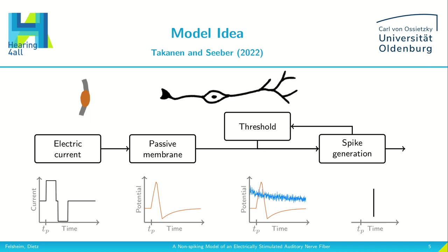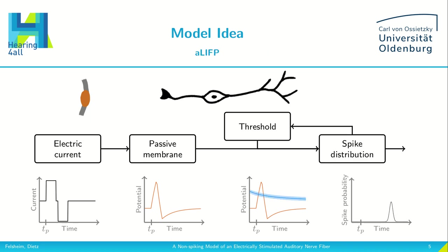Now, in our model we stay with the time-variant Gaussian distribution which describes the threshold. We do all our computations on this distribution, and that's how we can get the spike distribution as an output — the spike probability over time.